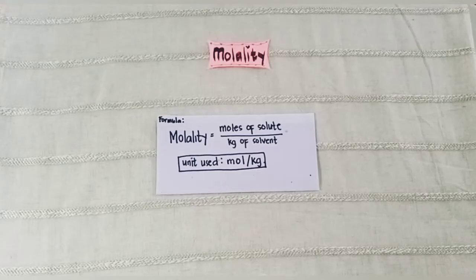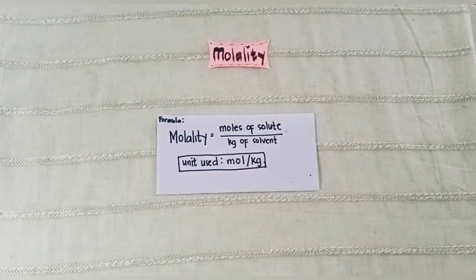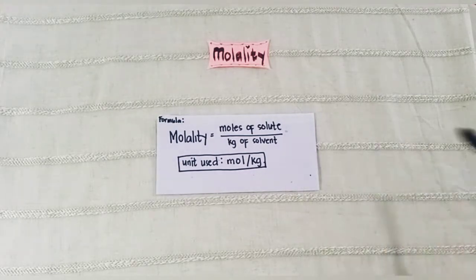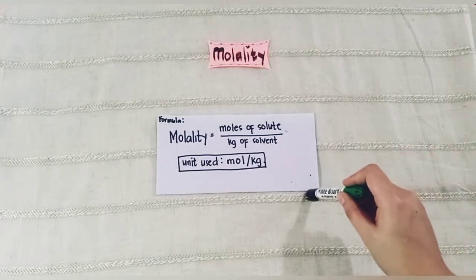So first is molality. It is the ratio of the moles of the solute to the kilograms of solvent. To find the molality, we have this formula: moles of solute over the kilogram of solvent, and the unit used for molality is mole per kilogram.